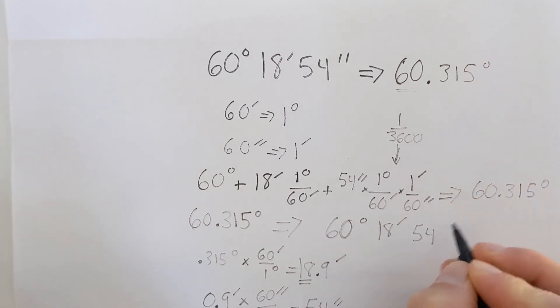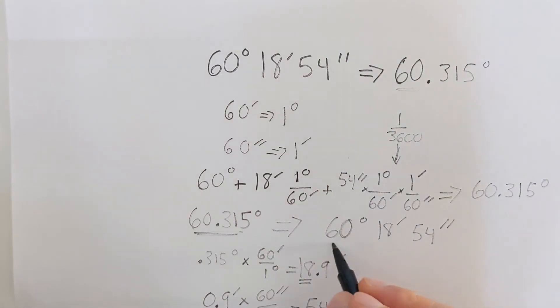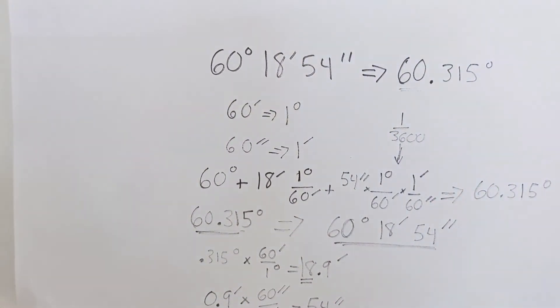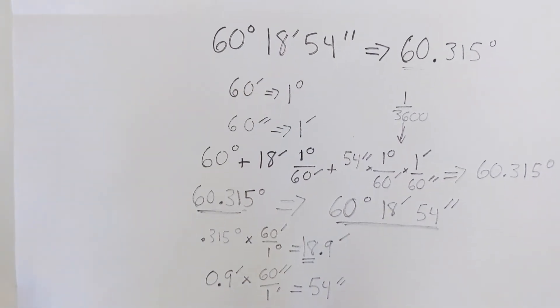So up here, completing our conversion from decimal degrees to degrees, minutes, seconds, we have 60 degrees, 18 minutes, 54 seconds.